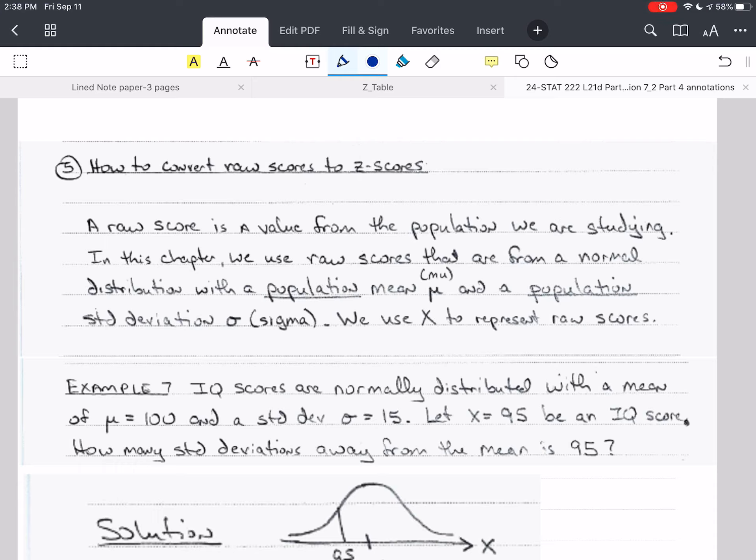A raw score is the value from the population that we're studying. In this chapter, all of our raw scores will be from a normal distribution that has a population mean mu. Remember to use the correct terms for these symbols. We want to portray to people that we've been educated and that we're knowledgeable about the subject, so we need to use the right terminology. So the population mean is mu, and the population standard deviation is sigma.